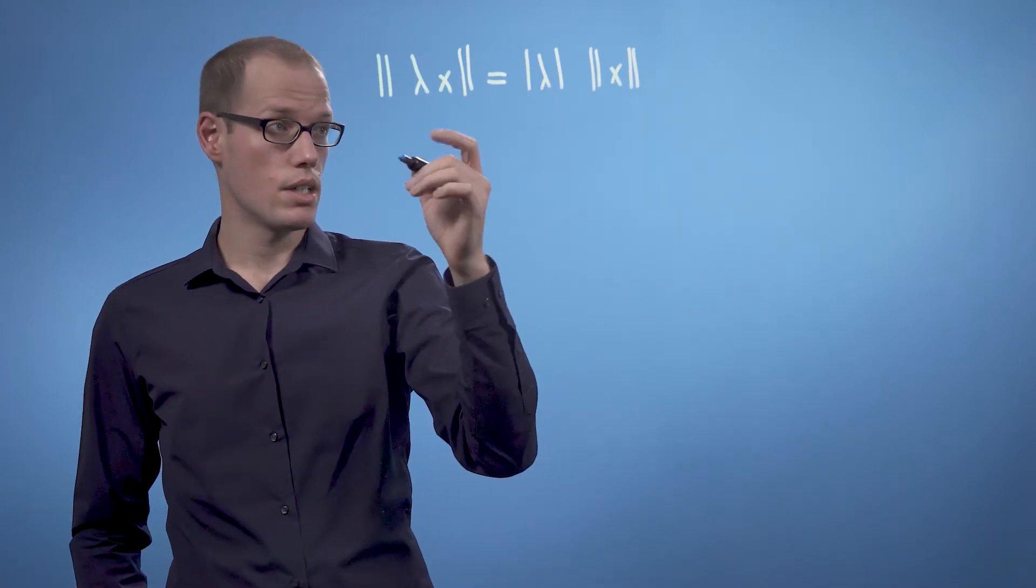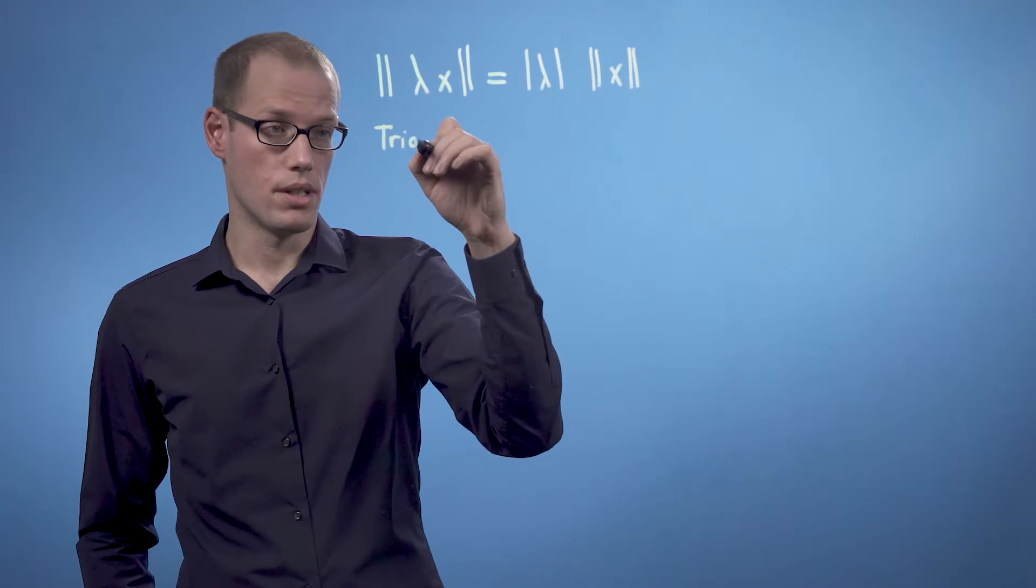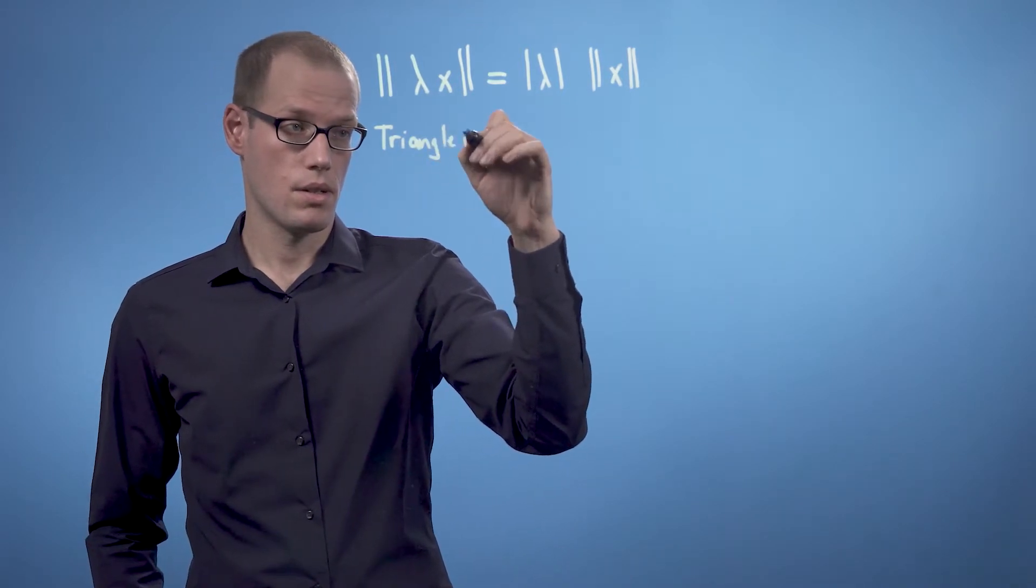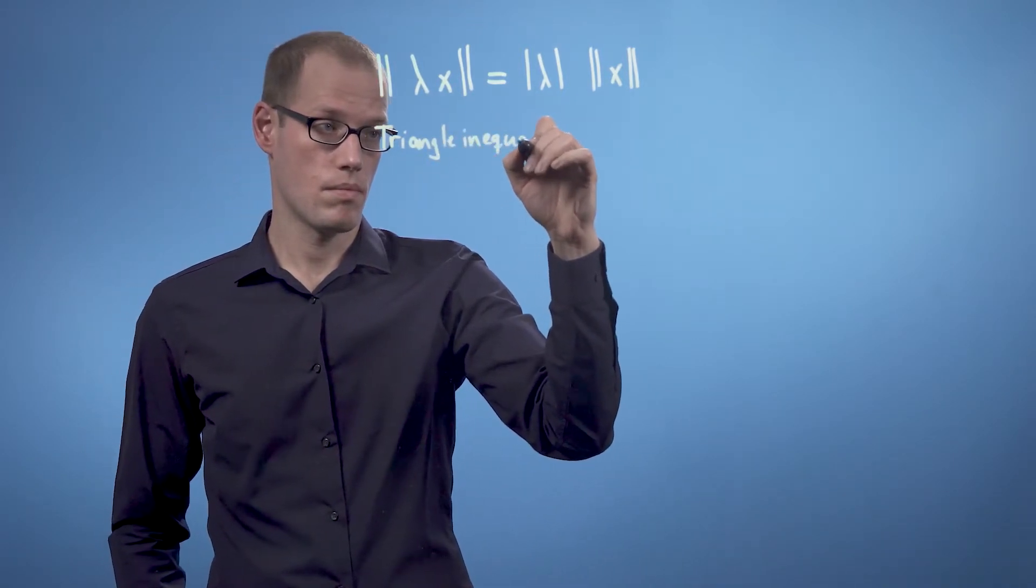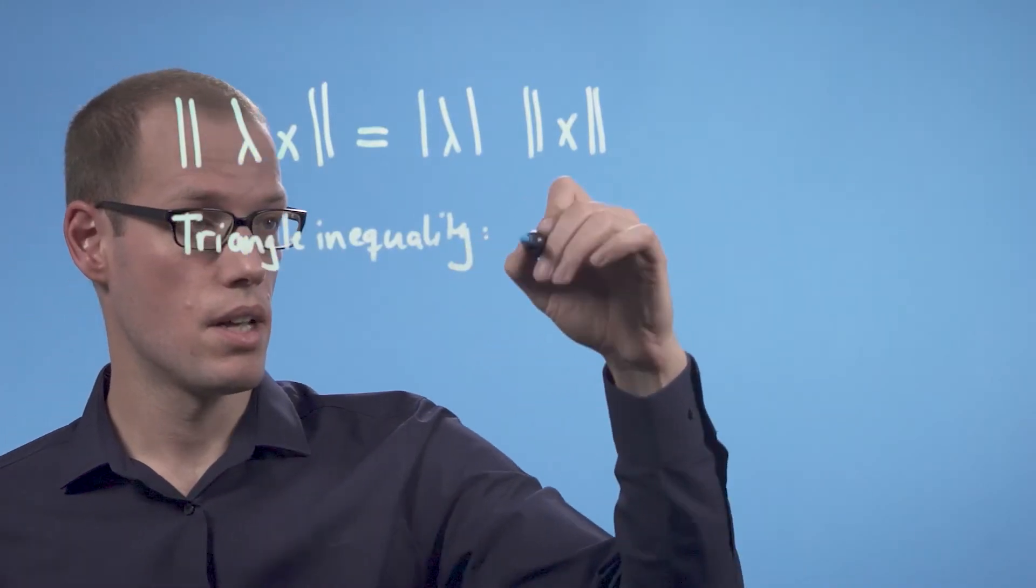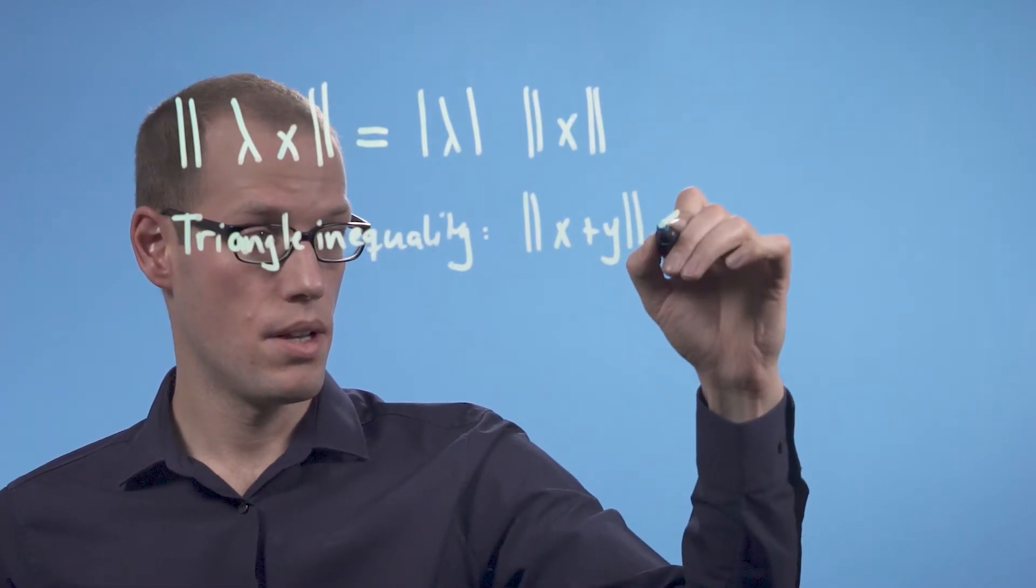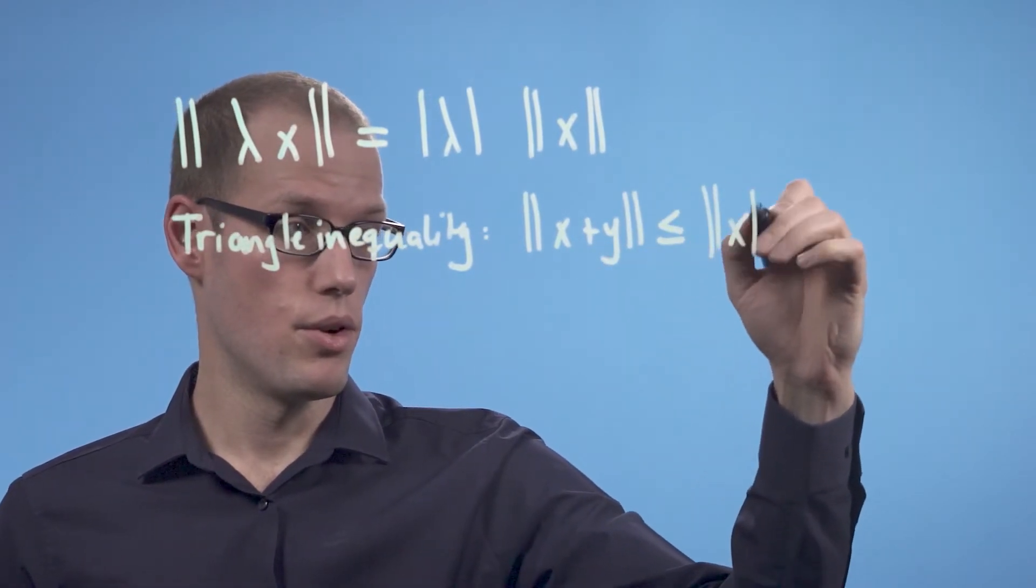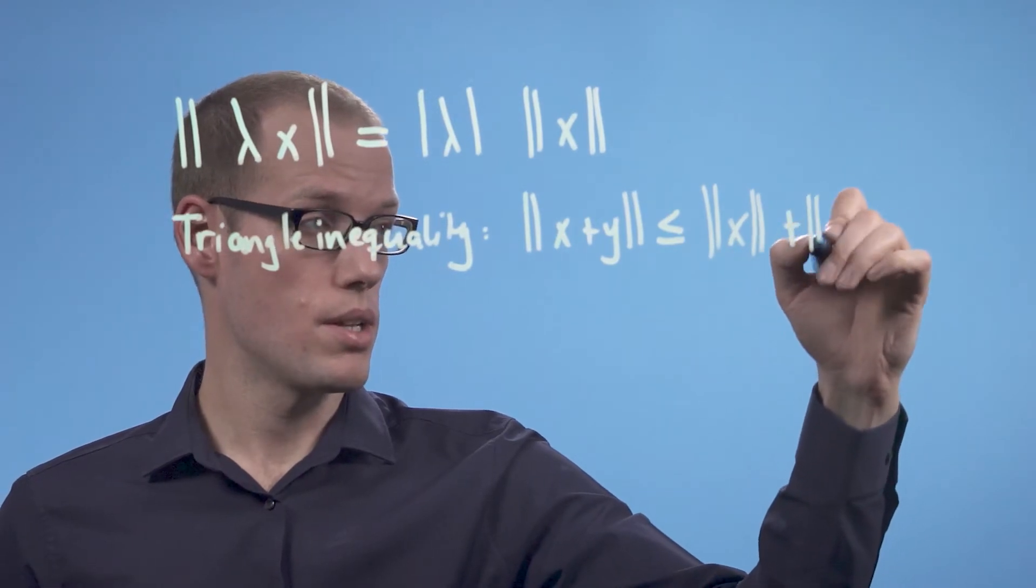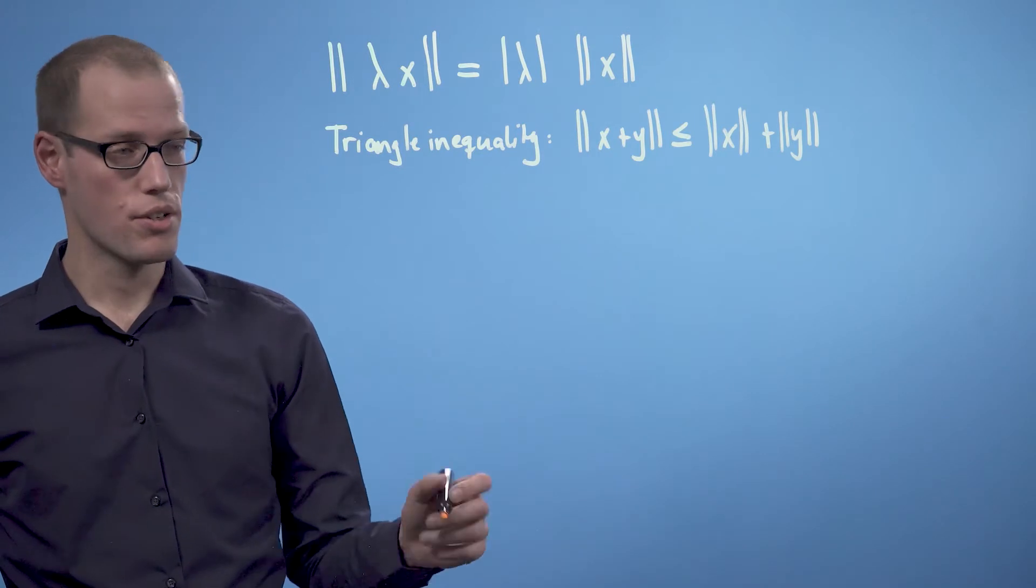The second property is the triangle inequality, which says that the norm of x + y is smaller or equal to the norm of x plus the norm of y. Let's have a look at an illustration.